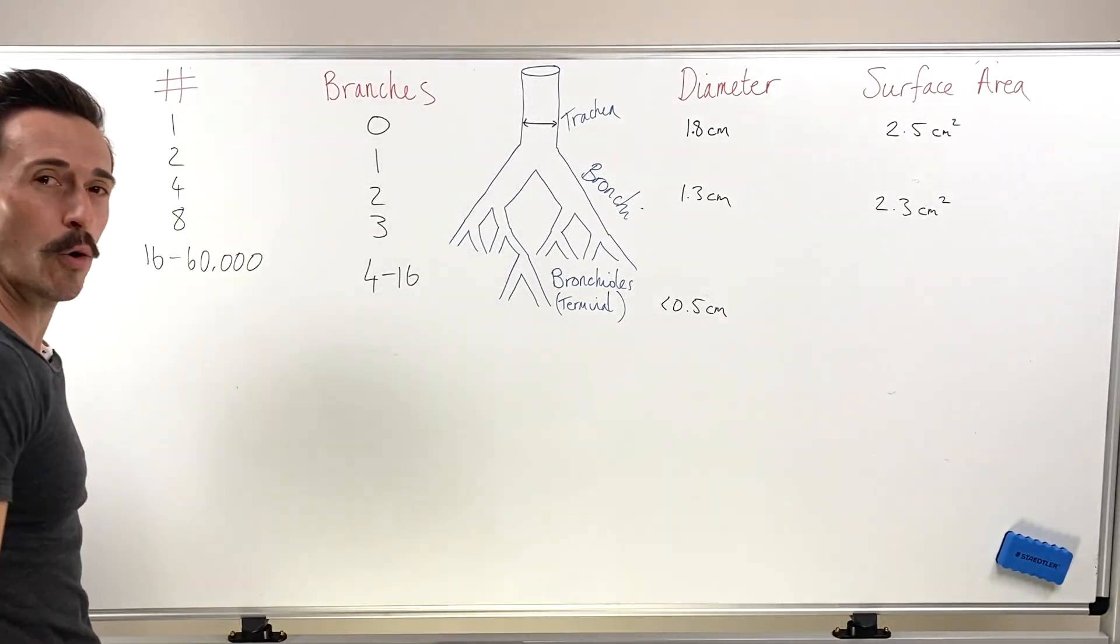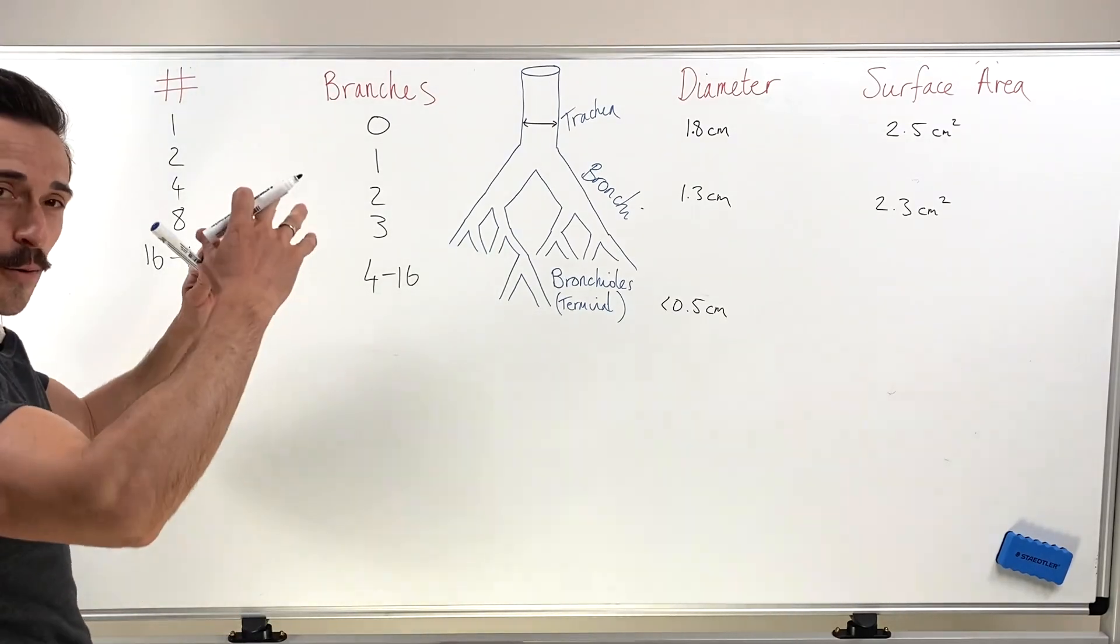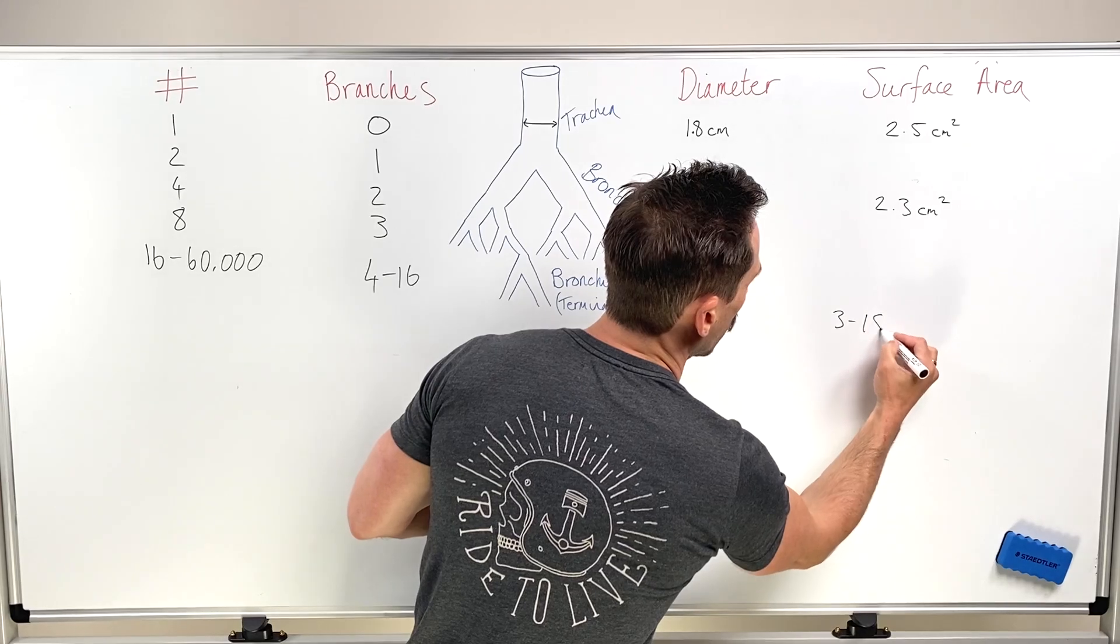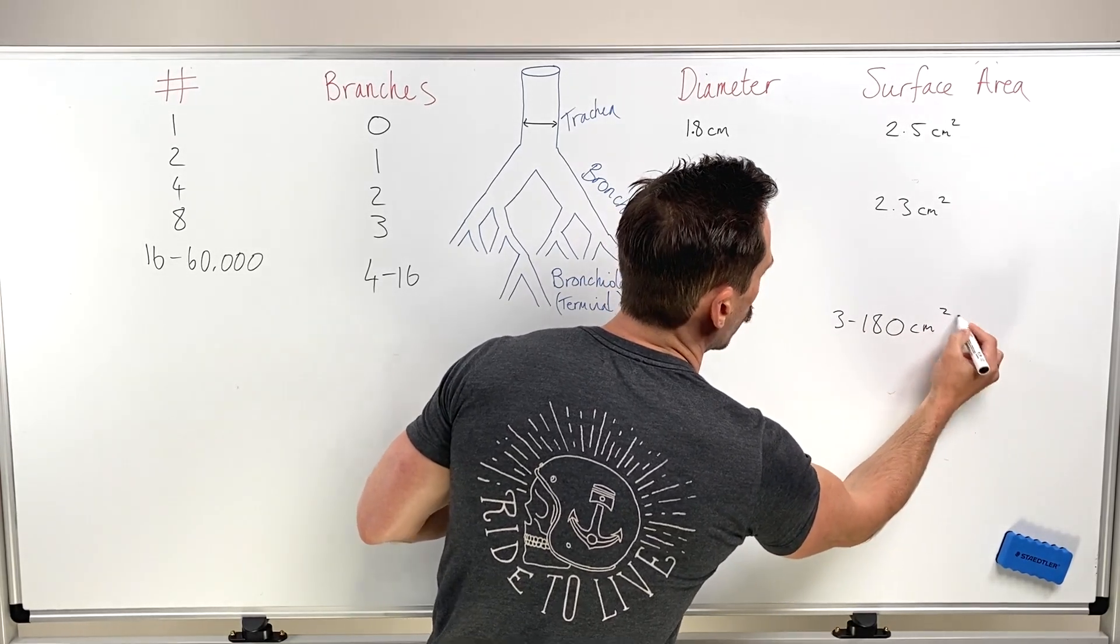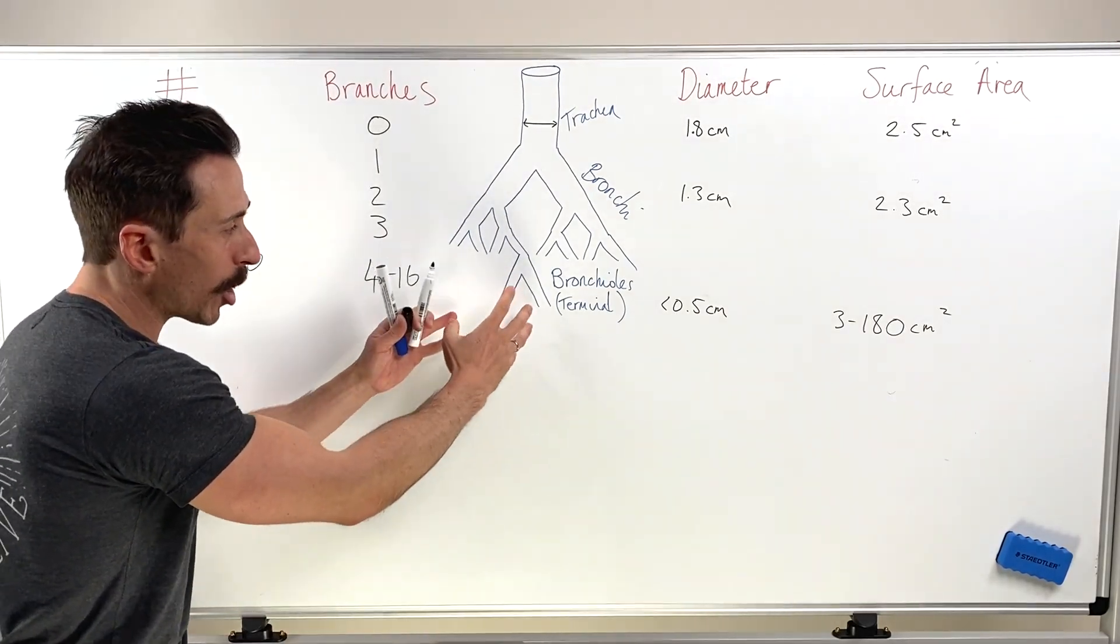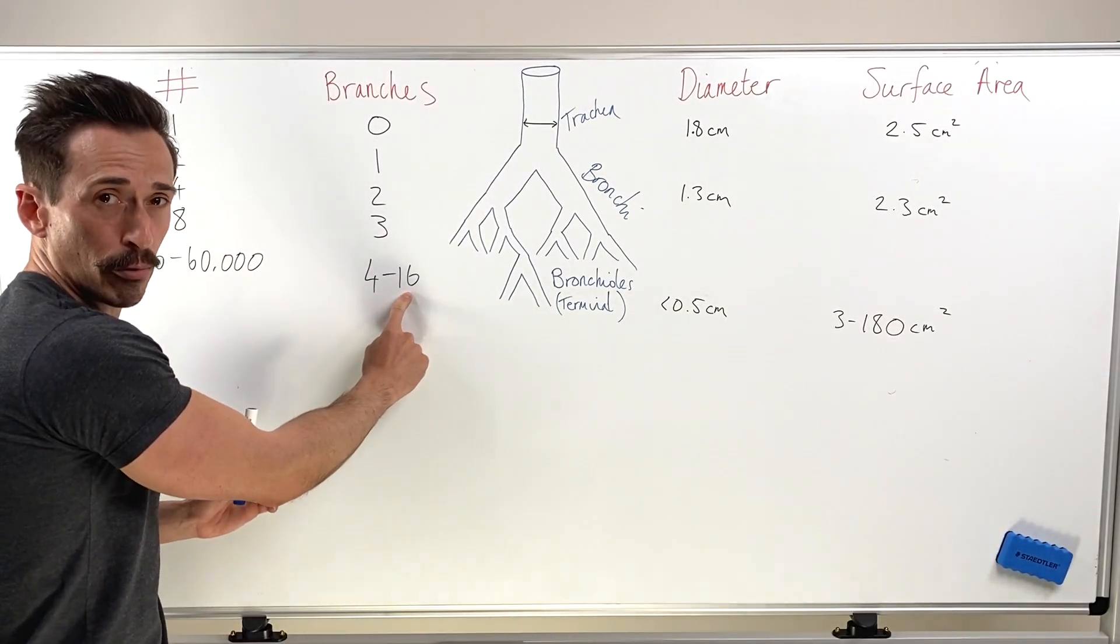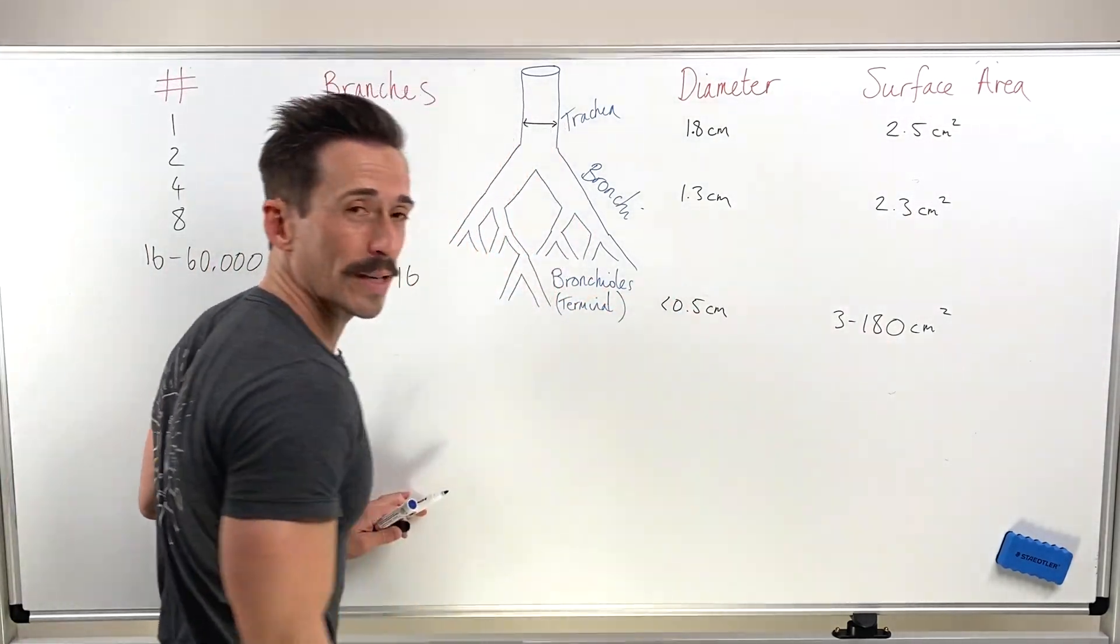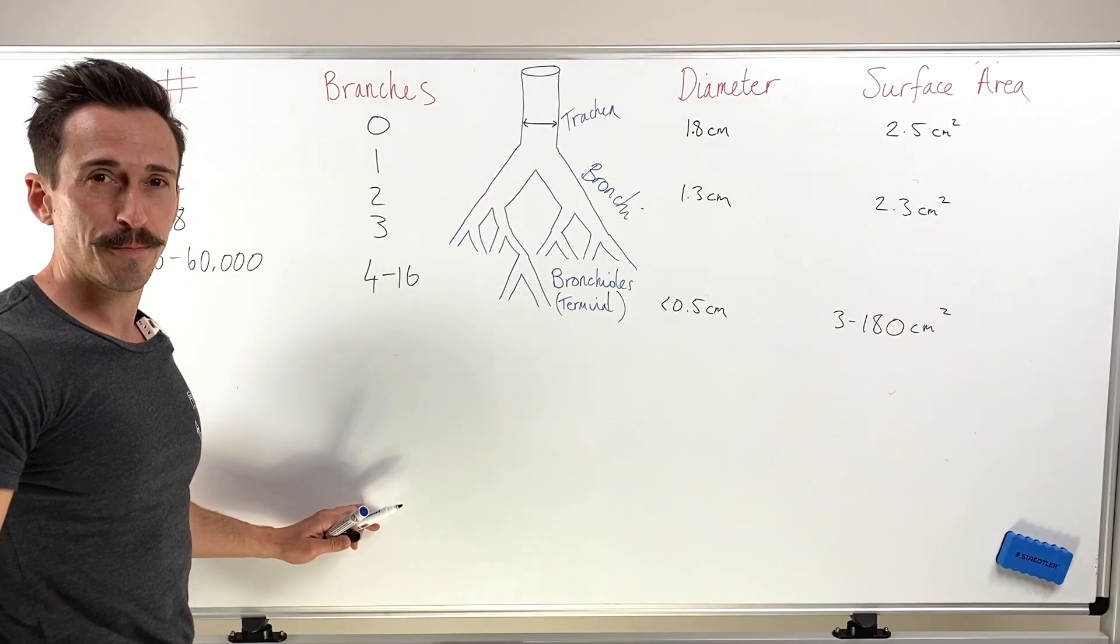You end up getting around about 60,000 individual branches of bronchioles. Each of them half a centimeter or less in diameter. And if you add all that together, the surface area ends up being between 3 to 180 centimeters squared. So obviously, 3 centimeters squared with the first lot of branching. But by the time we get to the 16th branching, 60,000 of them, 180 square centimeters.